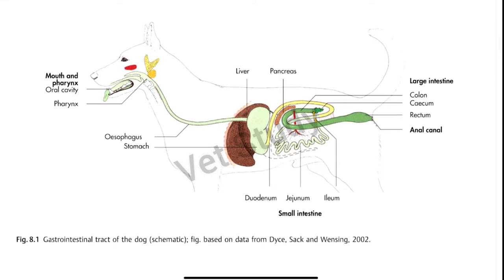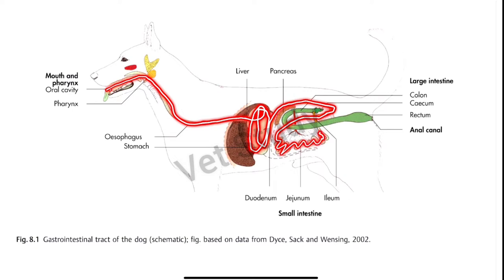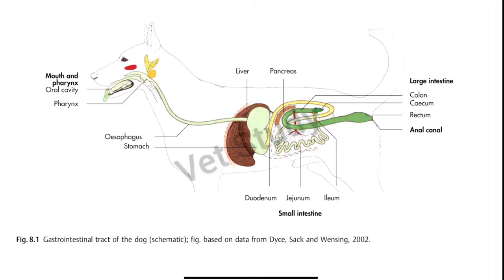Before starting the mouth, let's see the organs which come under the digestive system. First is the mouth and pharynx, then the oral cavity, then the pharynx, then the esophagus, then the stomach, then the small intestine — duodenum, jejunum, and ileum. After small intestine, large intestine begins with the cecum, then colon, then rectum. We also have the liver, pancreas, and salivary glands. We will study these one by one.